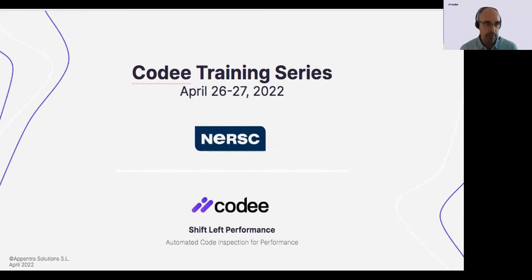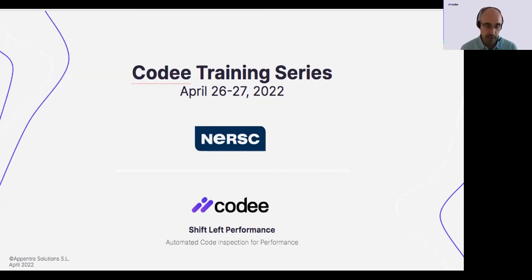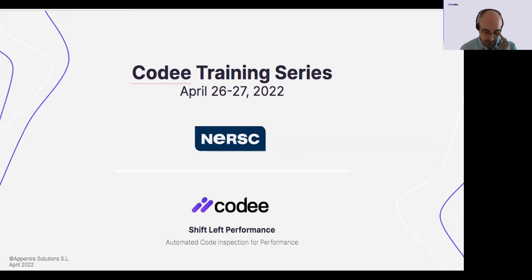For the first part, we will be seeing how you can use Kodi to detect defects in your OpenMP or OpenACC codes. Once you have taken your sequential code, decided what parts to offload, and added pragmas, Kodi can understand the code, understand your pragmas, and check if the pragmas are correct. This is what we call detecting defects in your GPU-enabled code.